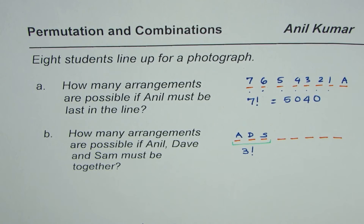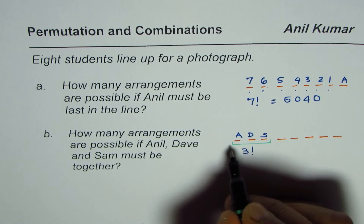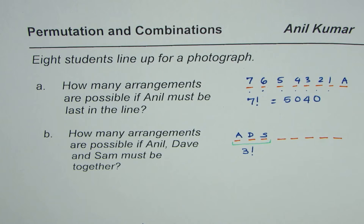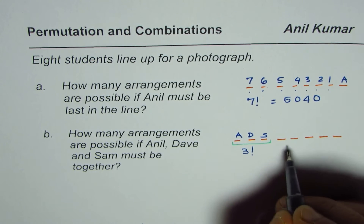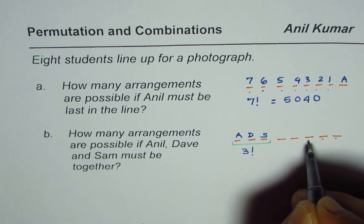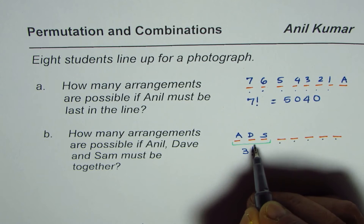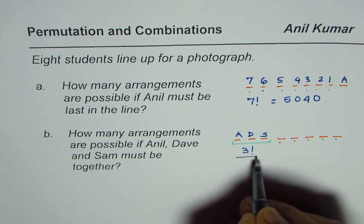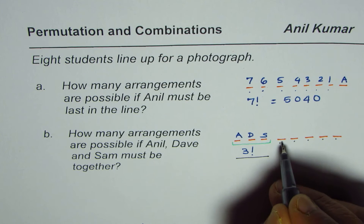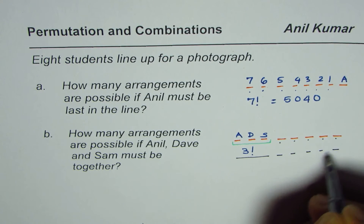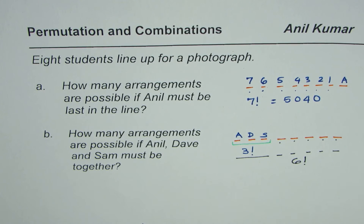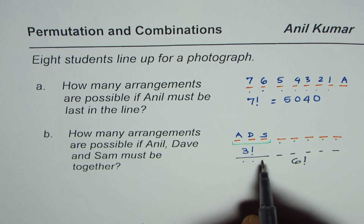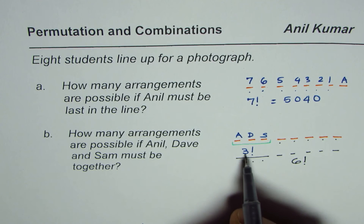We consider the three together as one unit, so we are left with six positions total: one, two, three, four, five, and one group — six positions. The ways in which these six positions can be filled is six factorial, and the ways in which the three can be arranged within their group is three factorial.